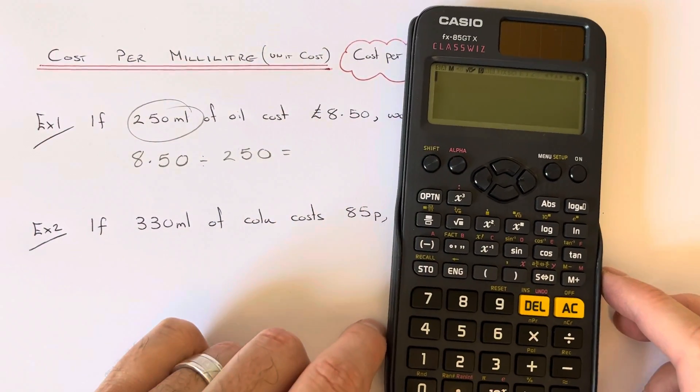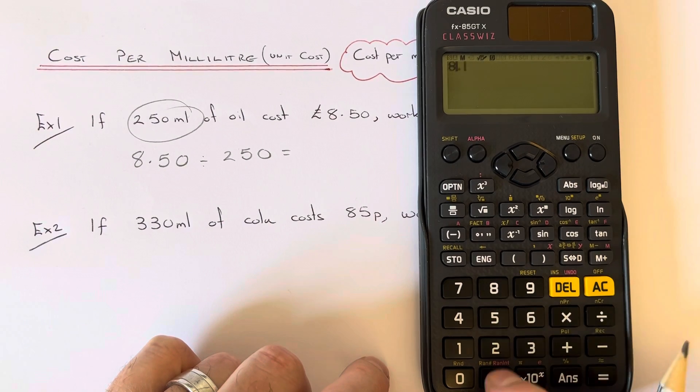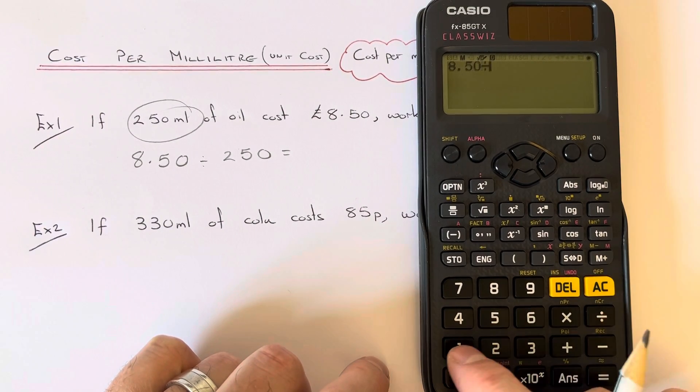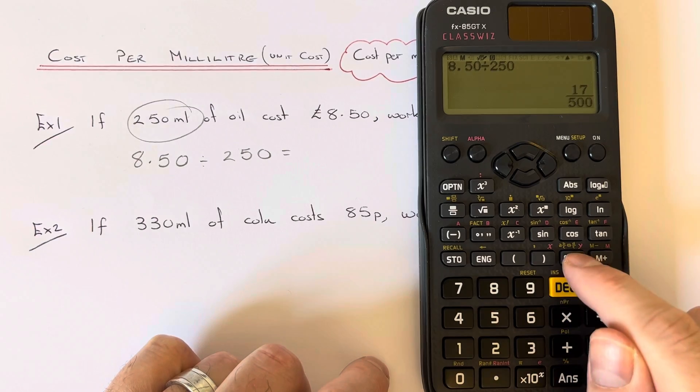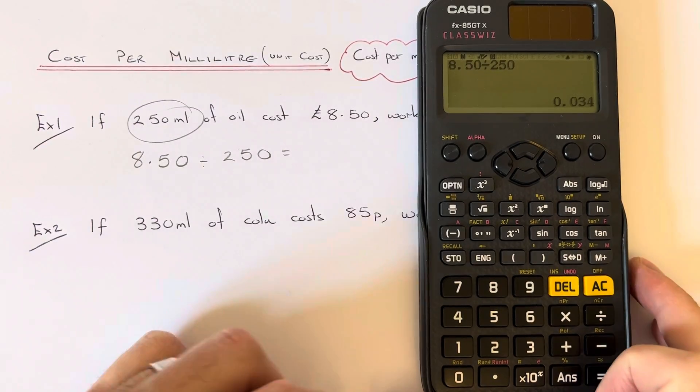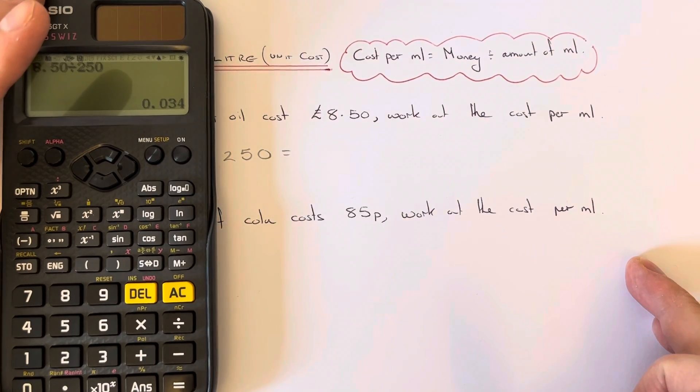So if you get your calculator to work this one out, eight pound fifty divided by 250.